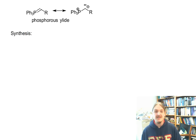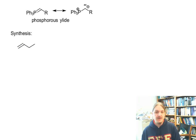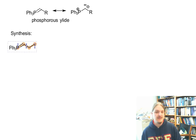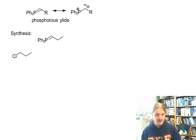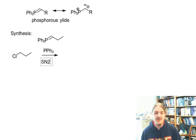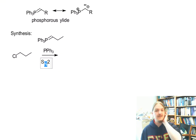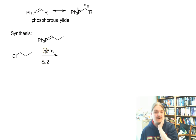So the synthesis of a phosphorus ylid — let's do a specific phosphorus ylid. Let's say that we were interested in producing this phosphorus ylid. It has one, two, three carbon atoms on it. This synthesis starts from a compound that has those three carbons and a leaving group like a chlorine or bromine, and then this compound is reacted with triphenylphosphine.